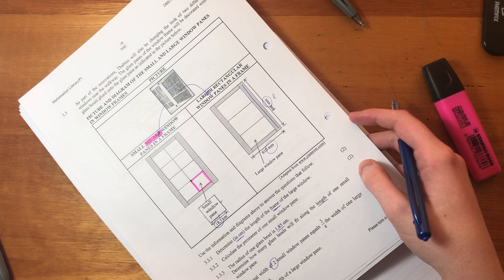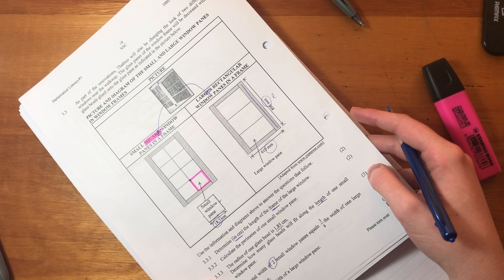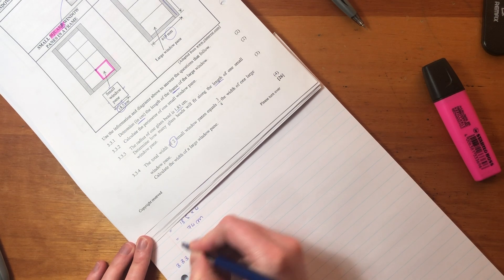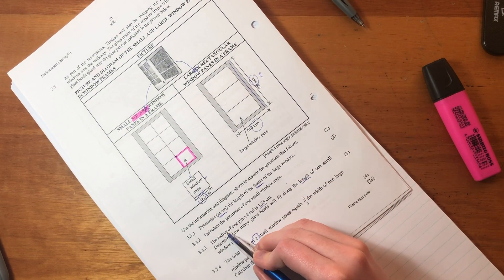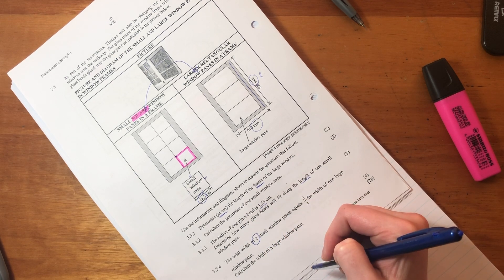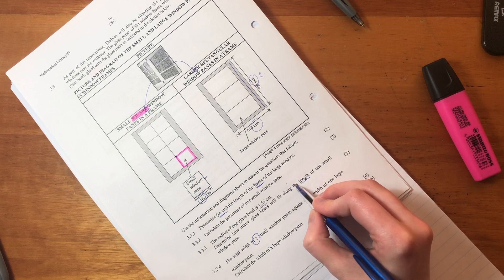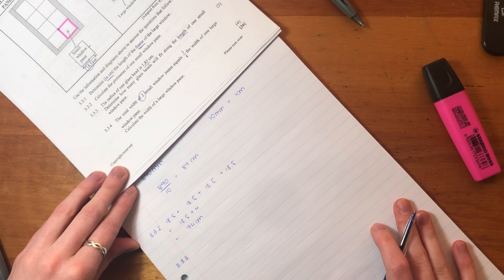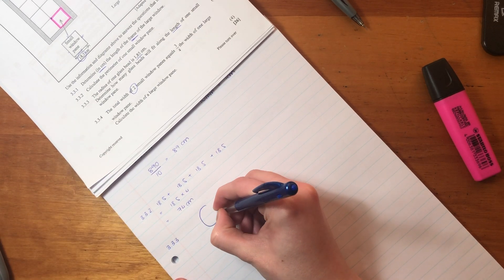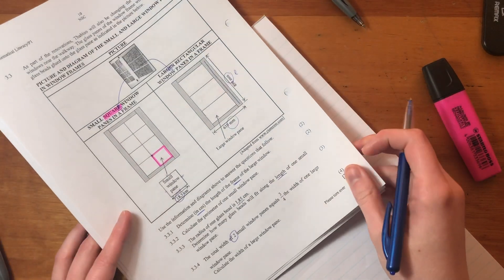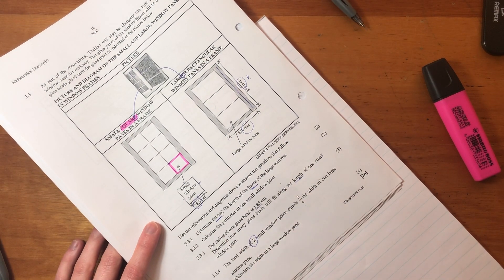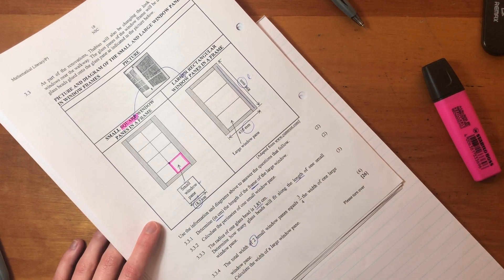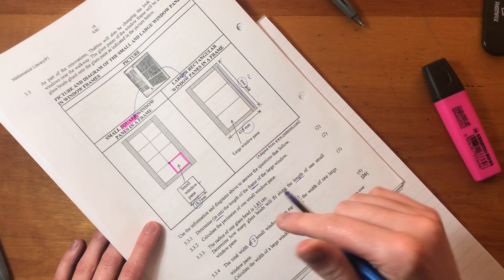Let's now move on to 3.3.3, which is quite a tricky question to actually get our heads around. It says the radius of one glass bead is 1.8 centimeters. Determine how many glass beads will fit along the length of one small window pane. So what I'm going to do here is I'm actually going to draw a bead. There's my bead. The reason we know it's a circle is because when we see the word radius, radius always refers to a circle. Radius doesn't refer to other shapes - it refers to a circle or a sphere or a cylinder, anything that's got a circle in it.